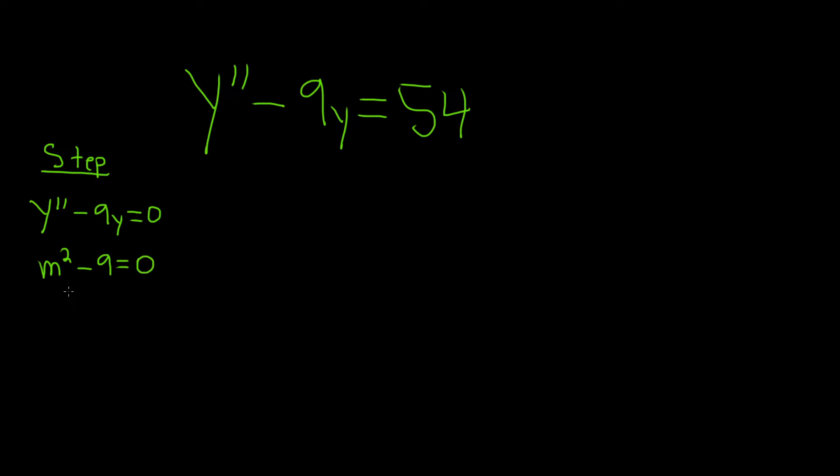So this factors, this is m minus 3 times m plus 3 equal to 0. So we have distinct real roots, m equals 3 and m equals negative 3. And recall that whenever you have distinct real roots, your answer is y sub c equals c sub 1 e to the 3x plus c sub 2 e to the negative 3x.